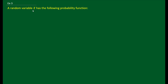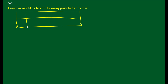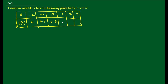Now let us take a different type of problem. A random variable capital X has the following probability function. Suppose X takes values: minus 2, minus 1, 0, 1, 2, and 3. The corresponding probabilities are: K, 0.1, 0.3, twice K (2K), 0.2, and K. We need to calculate mean and variance.